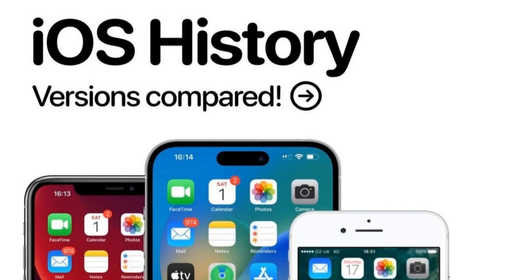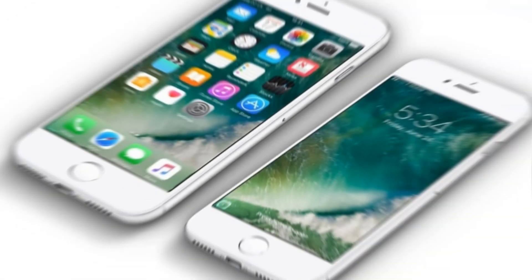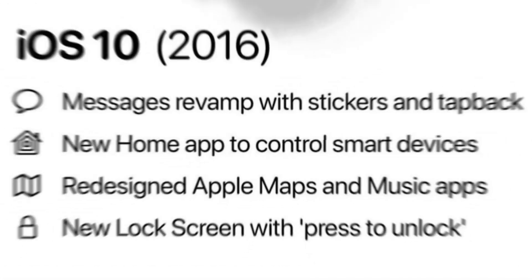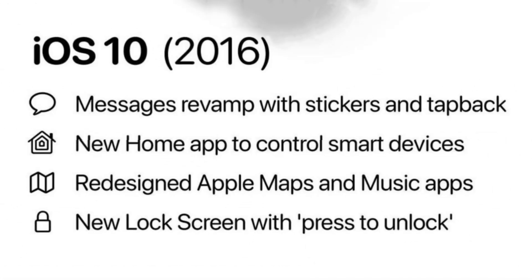Hey guys, today I am showing you the iOS history version compared. iOS 10 (2016): Messages revamped with stickers and Tapback, new Home app to control smart devices, redesigned Apple Maps and Music apps, and new lock screen with Press to Unlock.